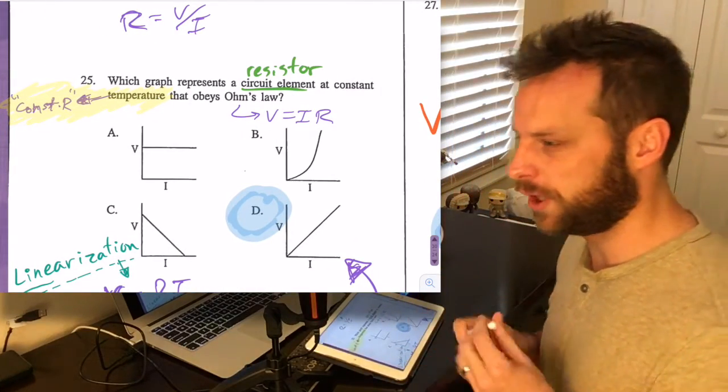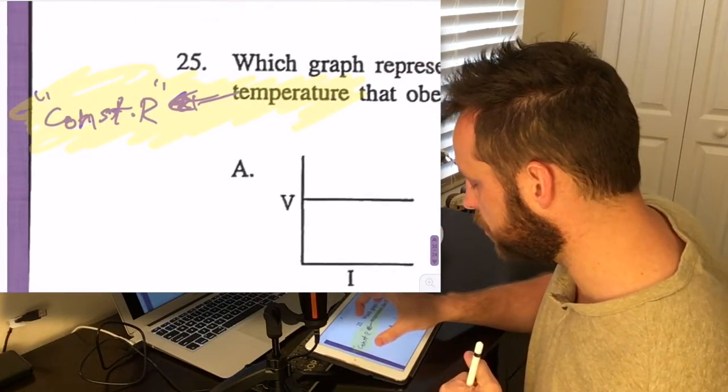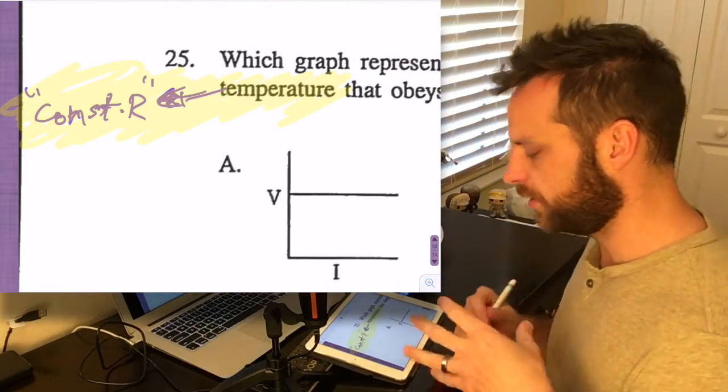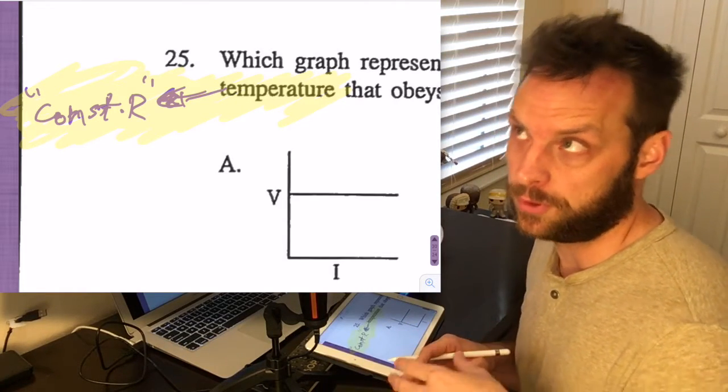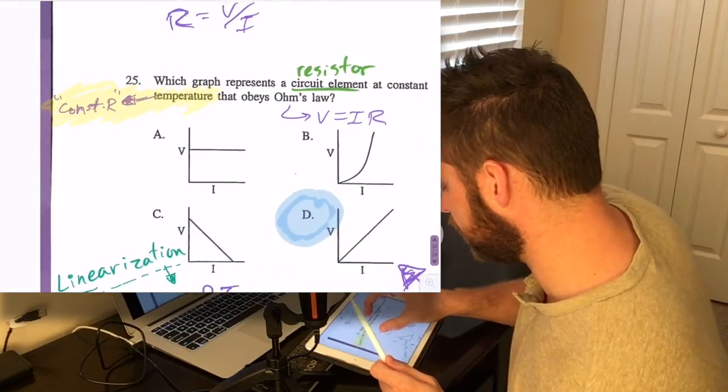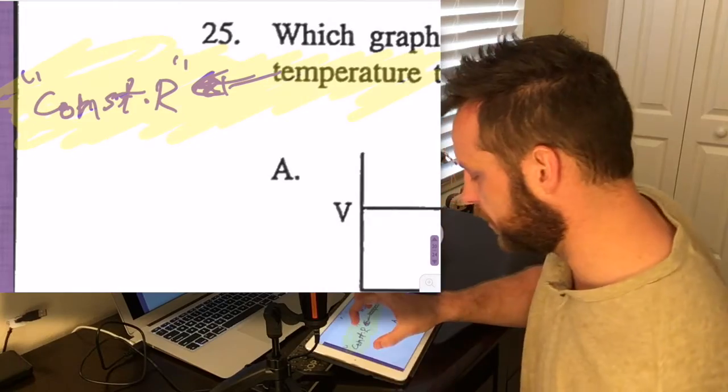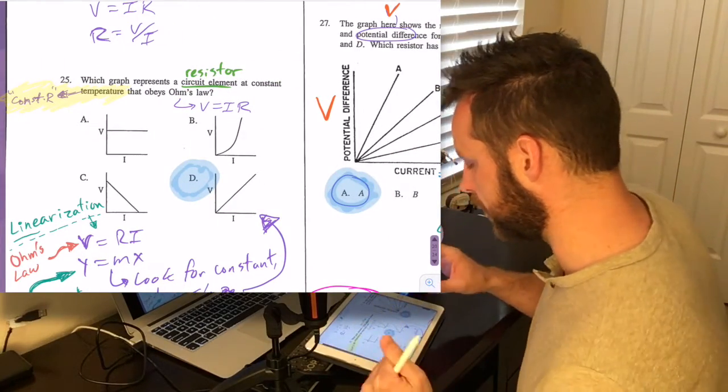Now that's secret code language. If you know some physics concepts, constant temperature is going to mean constant resistance if this resistor obeys Ohm's law. We would also say if it's an ohmic resistor. So that's what they're secretly telling you. We're going to have constant R, constant resistance for this resistor.